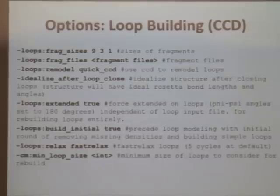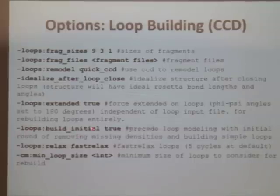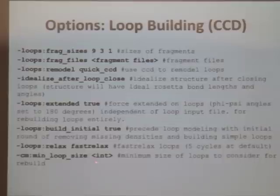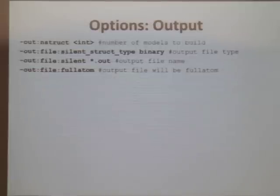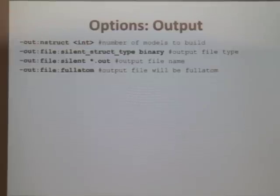I don't necessarily trust the loop regions in my template. This flag also removes missing densities and builds in the loops for you. You want to relax the loops and can set a minimum loop size — I usually set mine to four, so Rosetta only considers loops that are four residues or larger. Finally, you specify your output files: how many structures you want to build — the more the better — that you want to output into a silent file, the name of your silent file, and then it will be full-atom because you are doing a relax step in this protocol.